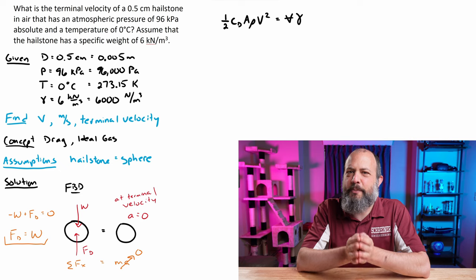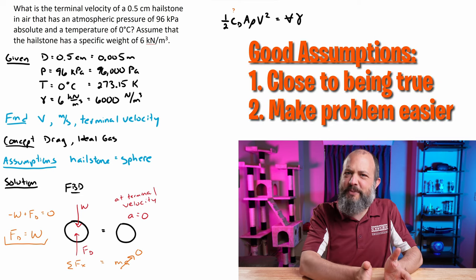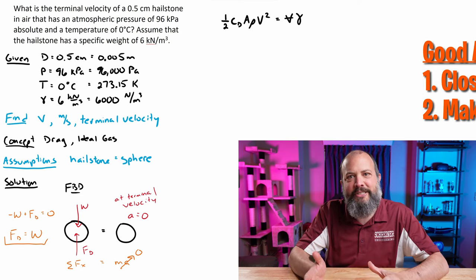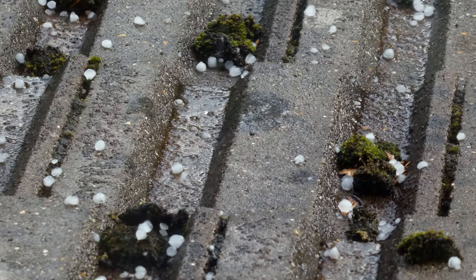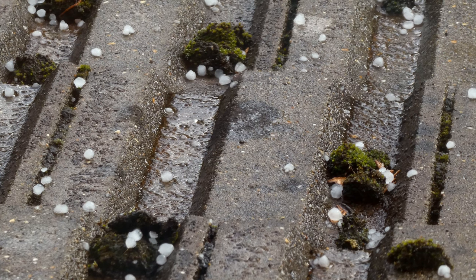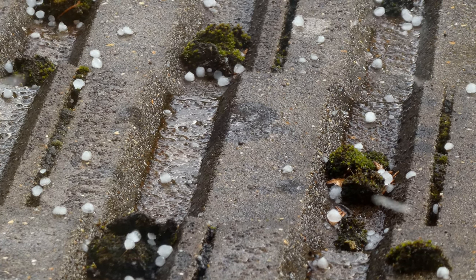I already previewed that this problem is going to get annoying later, but at first it starts off not too bad. The purpose of fluid mechanics assumptions is to choose something that's close enough to being true, but makes the problem way easier. So for this hailstone, let's assume that it's a sphere. I know the hail can come in all sorts of weird shapes, but it'll make the problem way easier if we assume it's a sphere than to try to account for all the weird geometry.